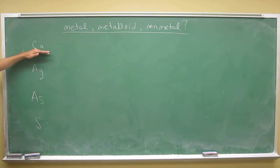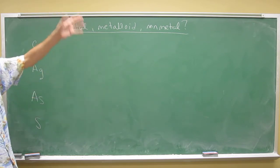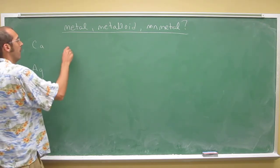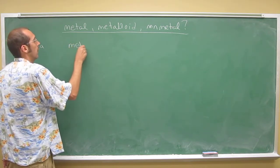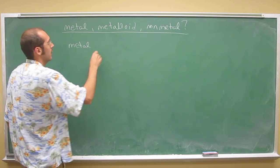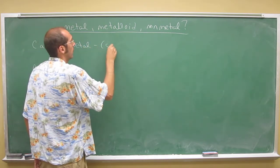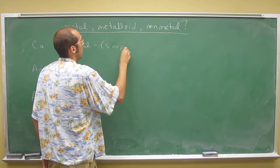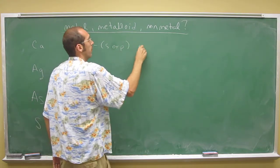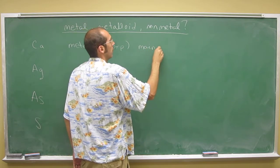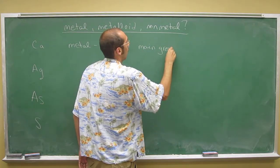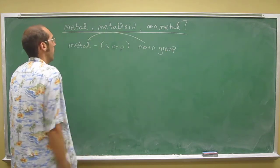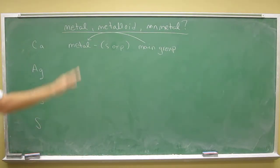So calcium is in the S block over there, so we call that a main group metal. So it's a metal. Any S and D block, S or P, is called a main group element. So in this case, this is called a main group metal, calcium, because it's in the S block.